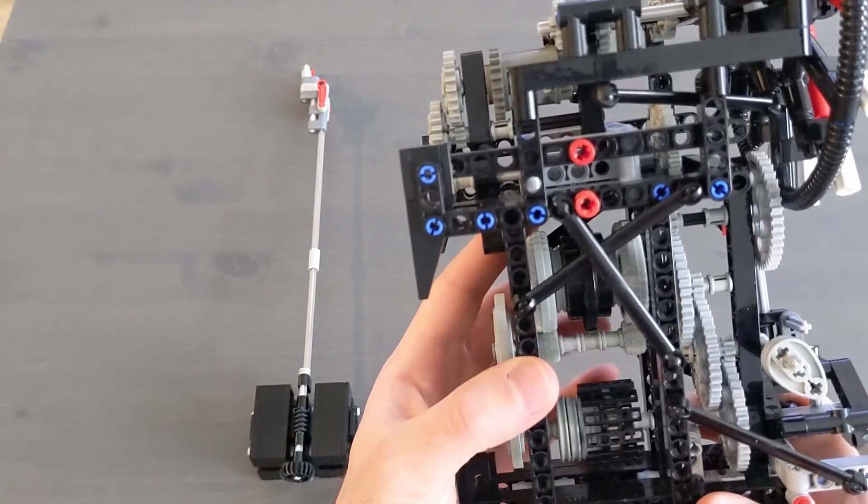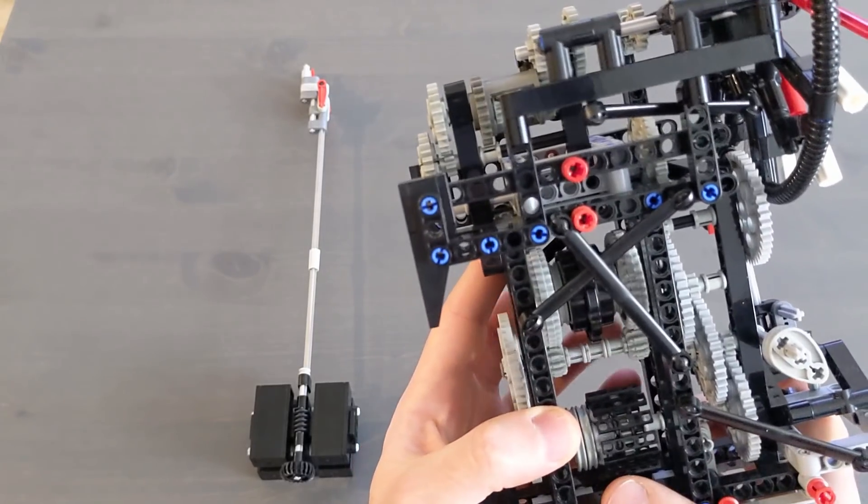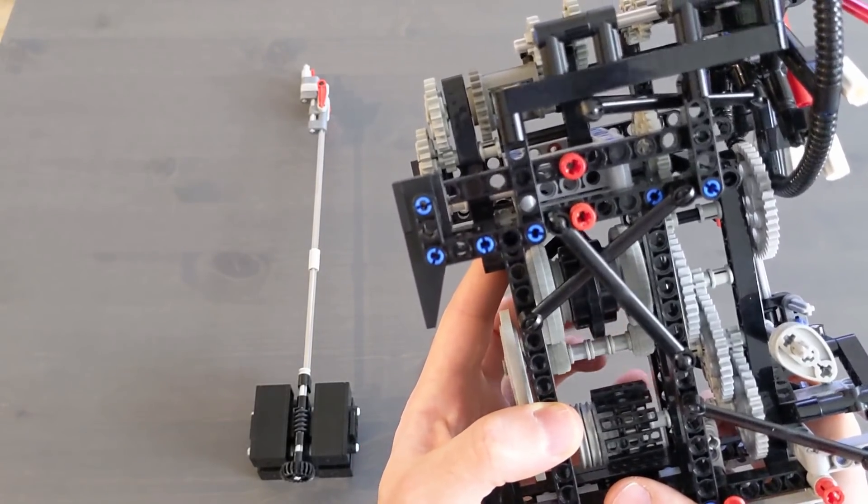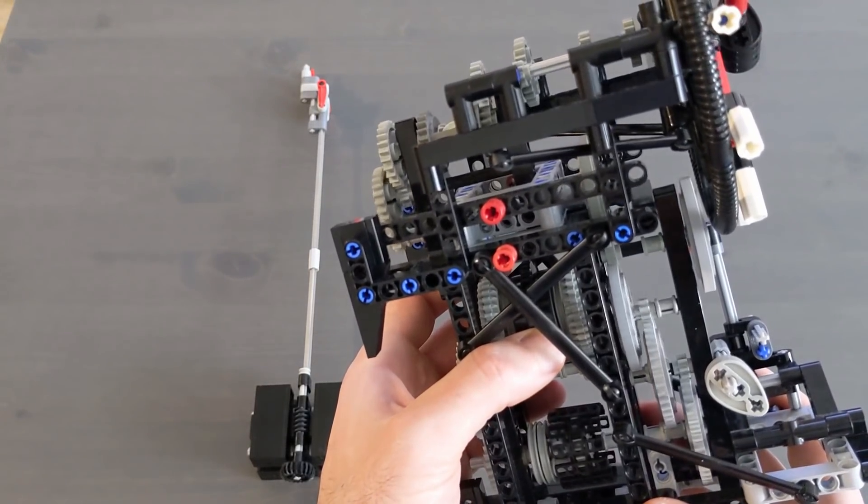This shows how the rewinding mechanism works. You can see that when I spin the drive wheel in reverse, this freewheel disengages, which allows the chain to be moved backwards. But when I spin it forwards, it re-engages and drives the clock forwards.